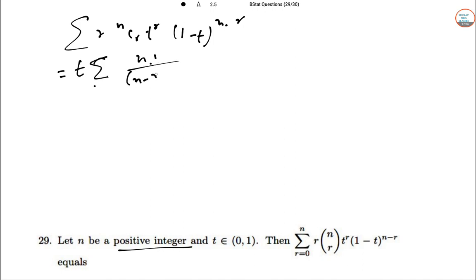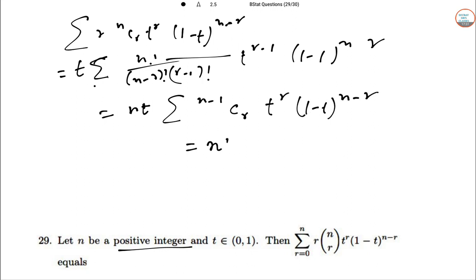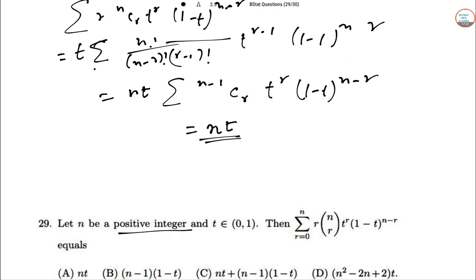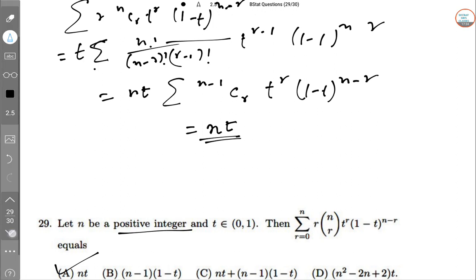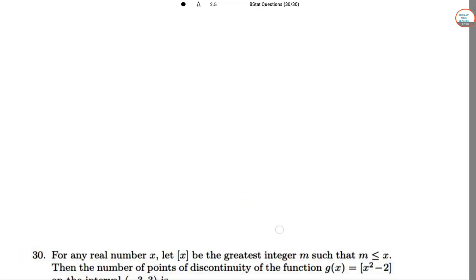This is T Σ [N!/(N-R)!(R-1)!] T^(R-1) (1-T)^(N-R). So this is N·T Σ ⁿ⁻¹Cᵣ T^R (1-T)^(N-R), which is nothing but N·T. So option A is correct.